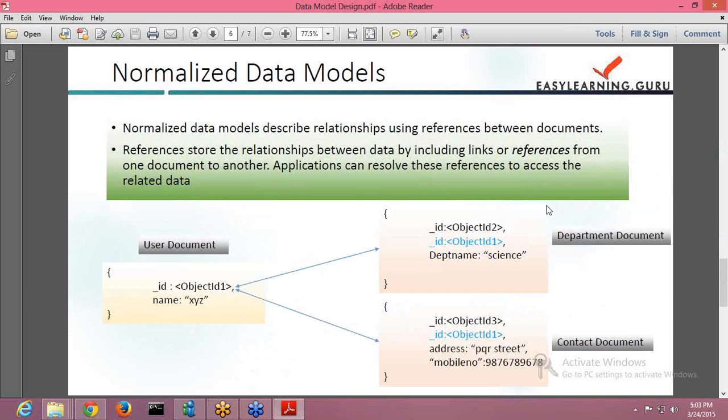Next is your normalized data model. Normalized data models describe relationships using references between documents. There are some situations where references become important and you have to reference some documents. References store the relationship between data by using a link or reference. So with the help of references, you store the relationship of one document with another document. Applications can resolve these references to access the related data.